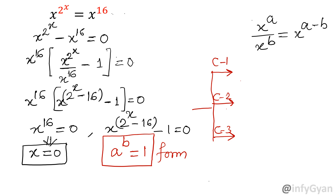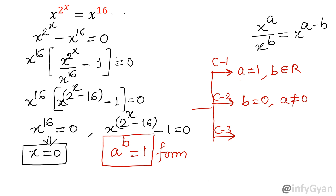When a raised to the power b equals 1: the conditions are — case 1, when a equals 1, your base is equal to 1 and power is equal to a real value. 1 raised to the power any real value equals 1. Case 2, your power will be 0, that means b is 0, but the important point is a cannot be equal to 0, because 0 power 0 will generate an indeterminate form, so that we have to avoid.